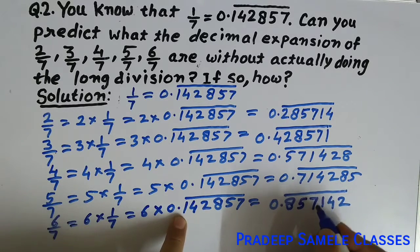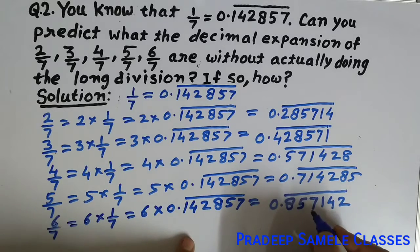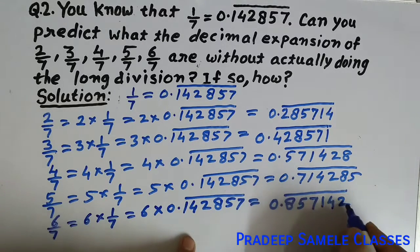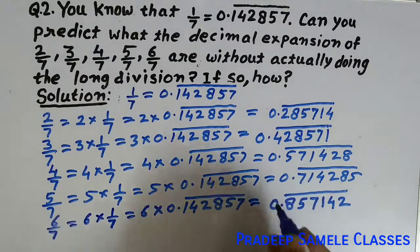So friends, in this way, the value of 6 by 7 becomes 0.857142 bar.